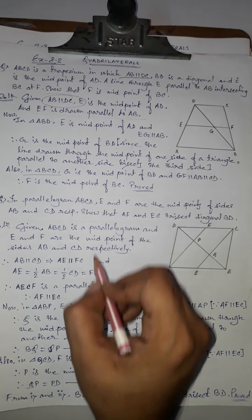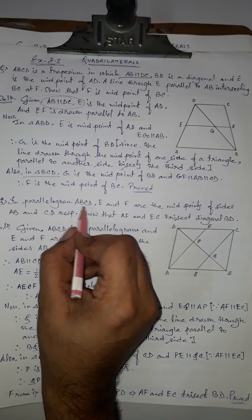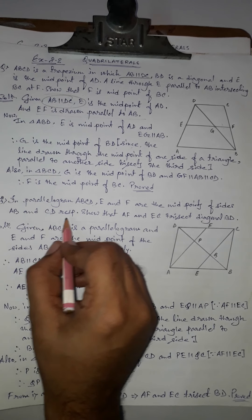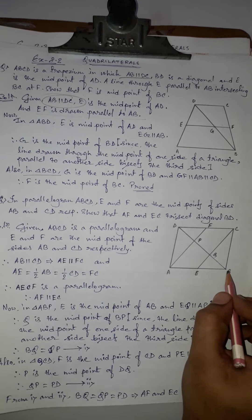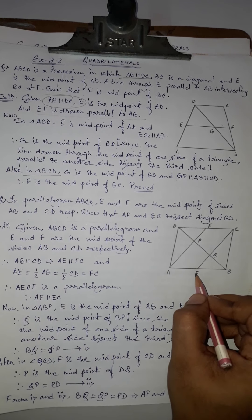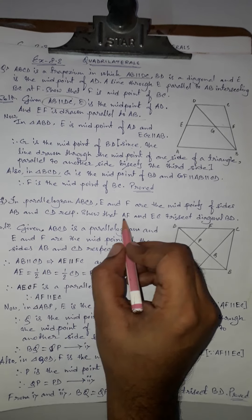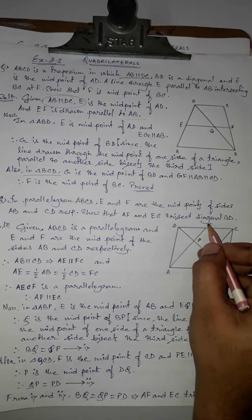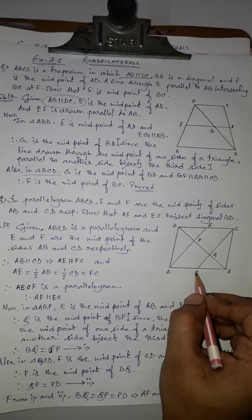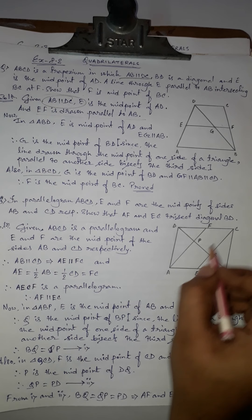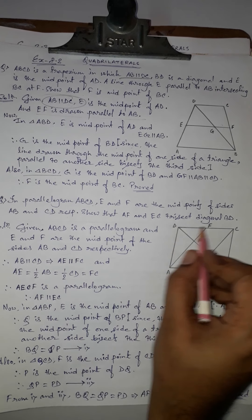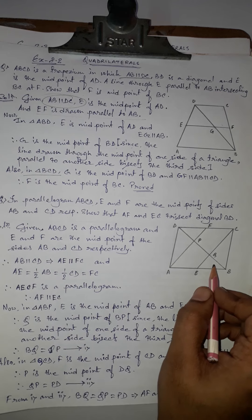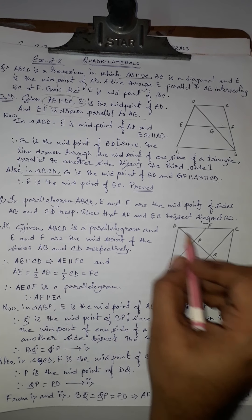The next problem: In parallelogram ABCD, E and F are the midpoints of sides AB and CD respectively. Show that AF and EC trisect the diagonal BD. Trisect means to divide into three equal parts.